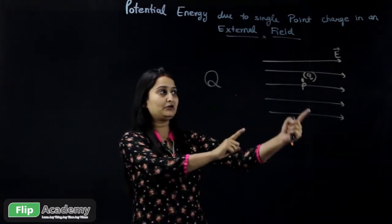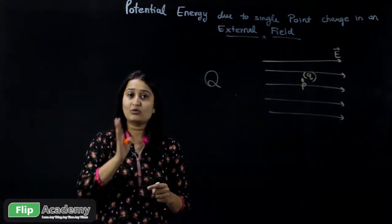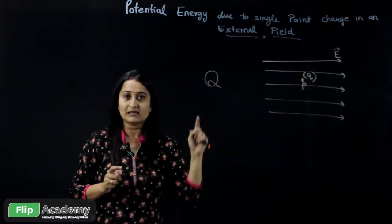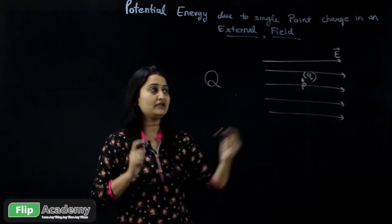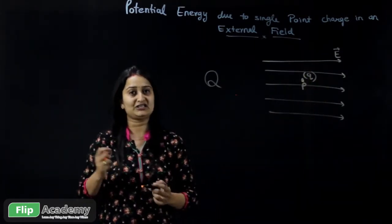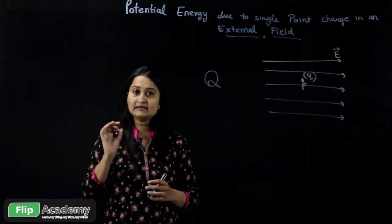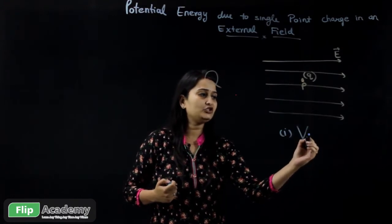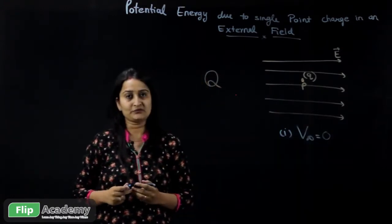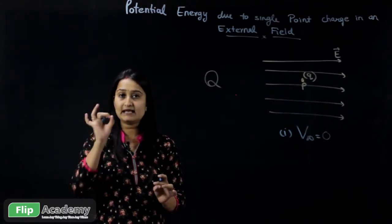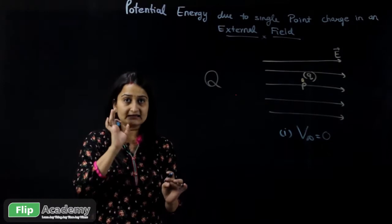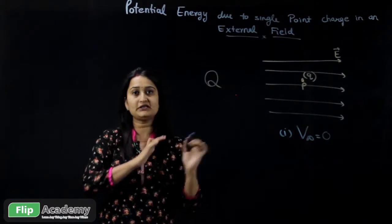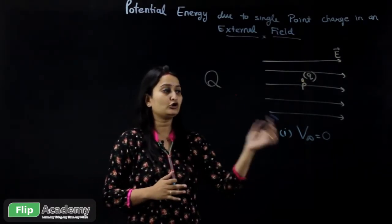In this particular case, we are talking about the work done in moving the charge from infinity to the point P. You have to work upon the point charge q placed in an external field. Now let's start with the derivation. There are two assumptions. First, we assume that the potential at infinity equals zero. If the point charge is at infinity, then the force is zero, the potential energy is zero, the work done is zero, and the potential is also zero.